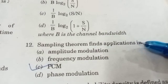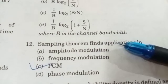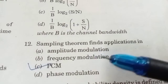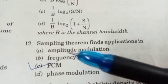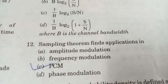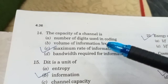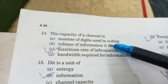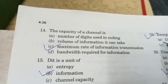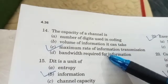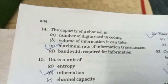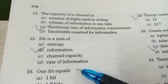Next question: the sampling theorem finds its widest applications in PCM — pulse code modulation. The capacity of a channel is the maximum rate of information transmission. That is nothing but the capacity of the channel.